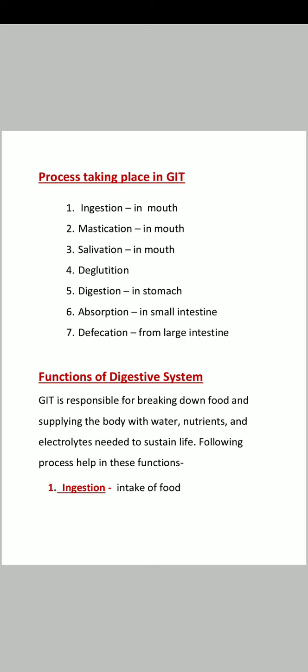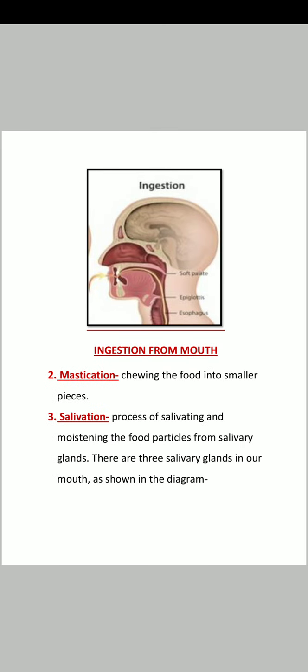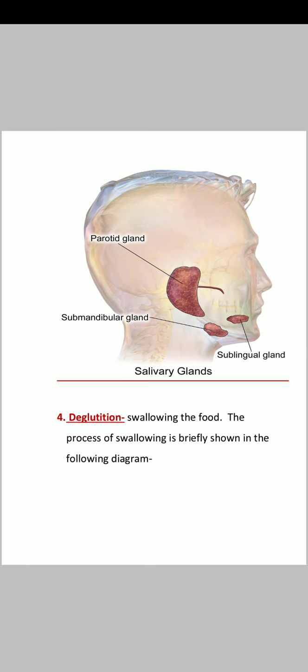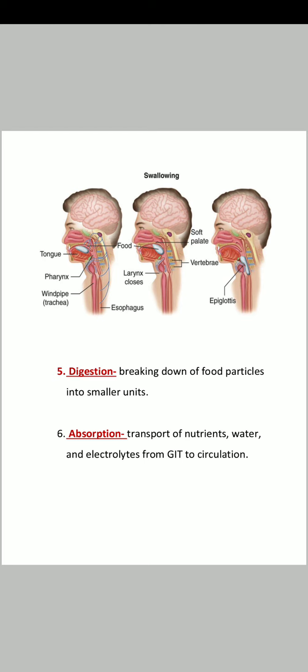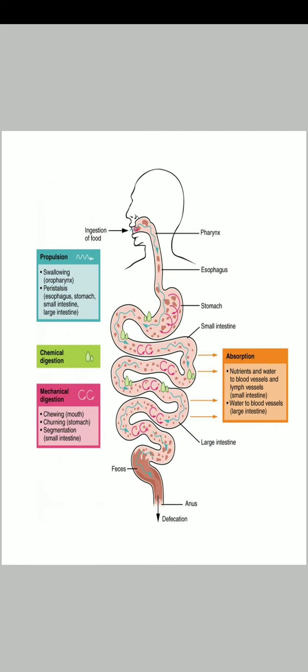Now we have studied the processes in GIT: ingestion, mastication, salivation, deglutation, digestion, absorption, and defecation. Ingestion is intake of food from the mouth. Mastication is chewing the food. Salivation is releasing saliva from the salivary gland to moisten and make food frictionless. Deglutation from the oropharynx means swallowing of food. Food then reaches the stomach where digestion occurs — breaking down food particles with HCL and enzymes. Then in the small intestine, absorption takes place — nutrients, water and electrolytes pass through to blood circulation.